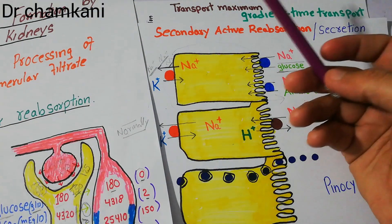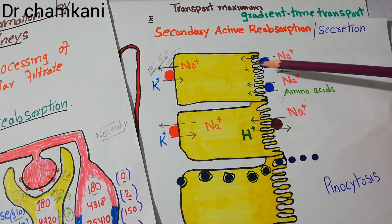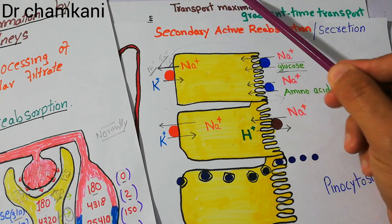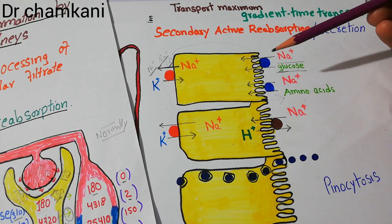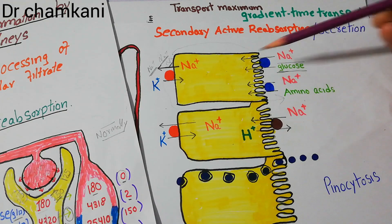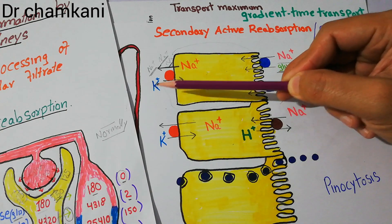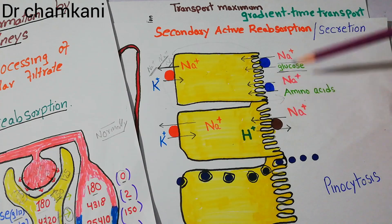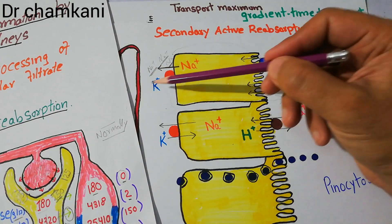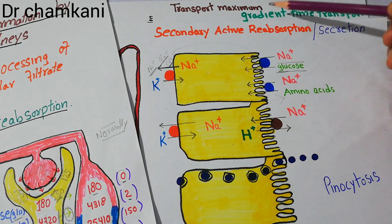Substances that are not directly dependent on an energy-consuming process and not dependent on carrier proteins do not exhibit transport maximum; instead they exhibit reabsorption through gradient time transport. If a high concentration is present in the tubule and a low concentration is on the other side, flow will occur from the larger side toward the lower side — that is the concentration gradient. Similarly, if a large charge is present on one side and a small charge on the other, charge will flow toward the smaller side — that is the charge or chemical gradient.